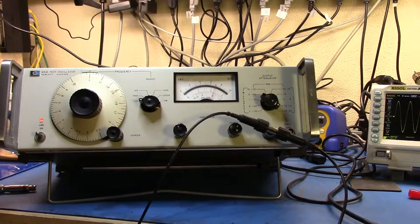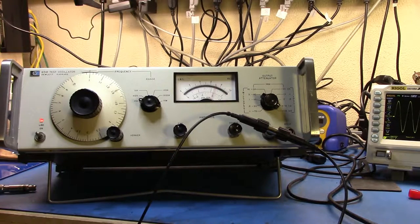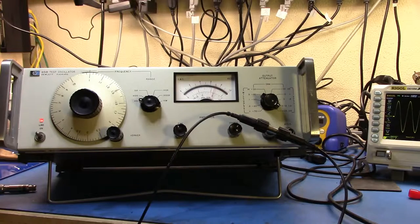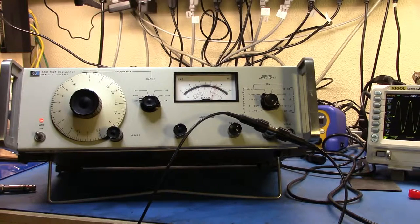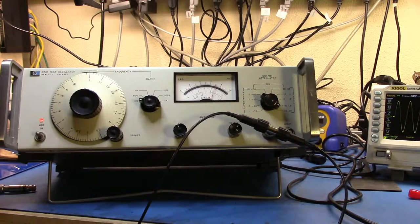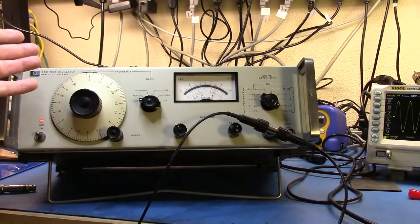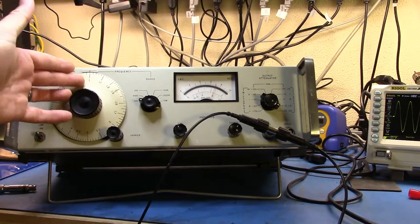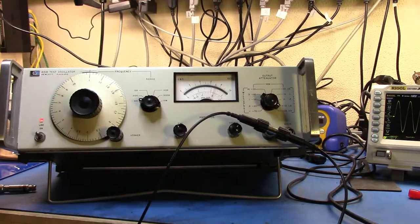I want to take a look at a piece of kit I've had for quite a bit of time. This is a 651B test oscillator that produces a nice clean sine wave from 10 Hz, which we can see here, all the way up to 10 MHz.